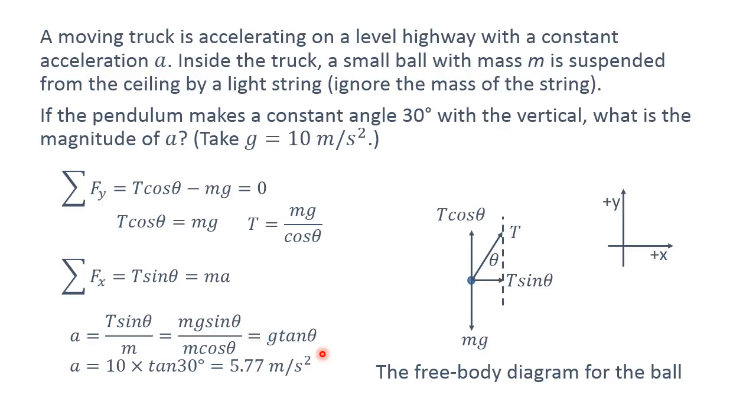So you get g tangent theta. Then plug in the numbers. Let's take g to be 10 meters per second squared and theta to be 30 degrees. You put it in there and you get 10 multiplied by tangent 30 degrees equal to 5.77 meters per second squared. Then you find the acceleration in the x direction.